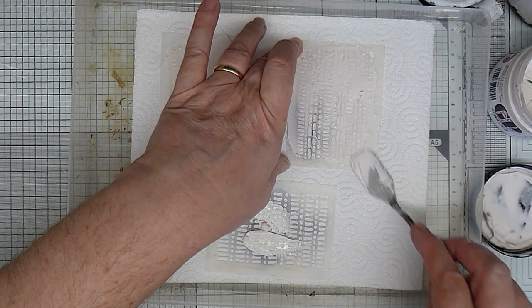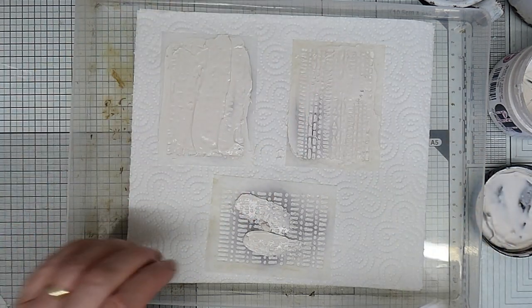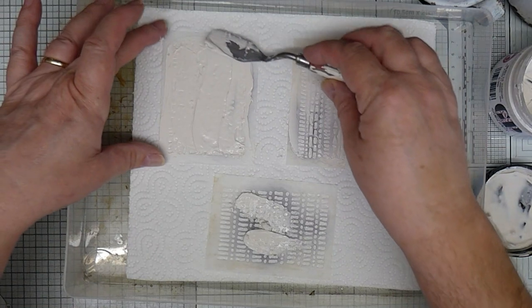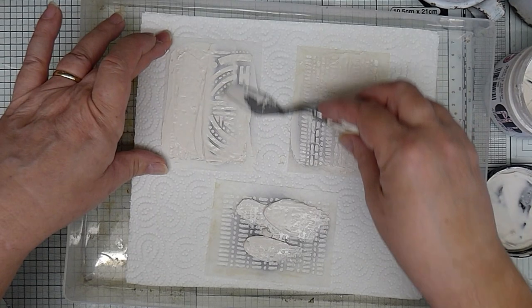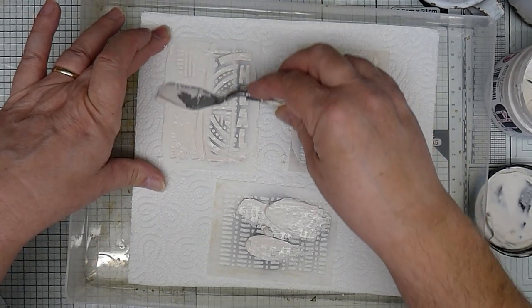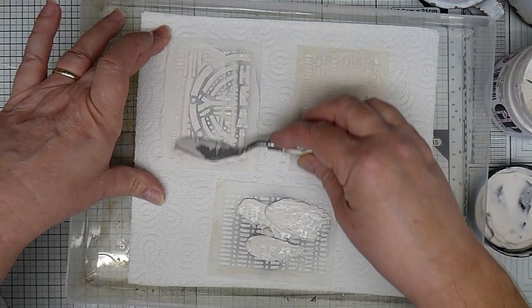The grunge paste does dry fairly quickly. And the fact that this is absorbent, it does take so much of the moisture out of the grunge paste to set off with straight away, more or less.